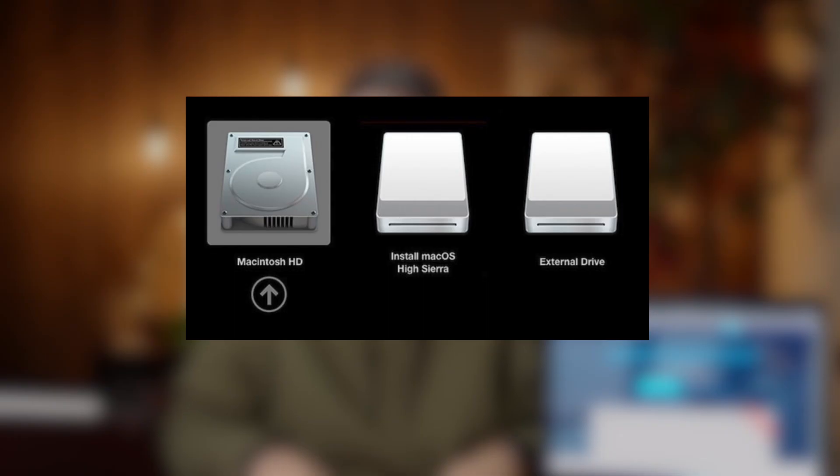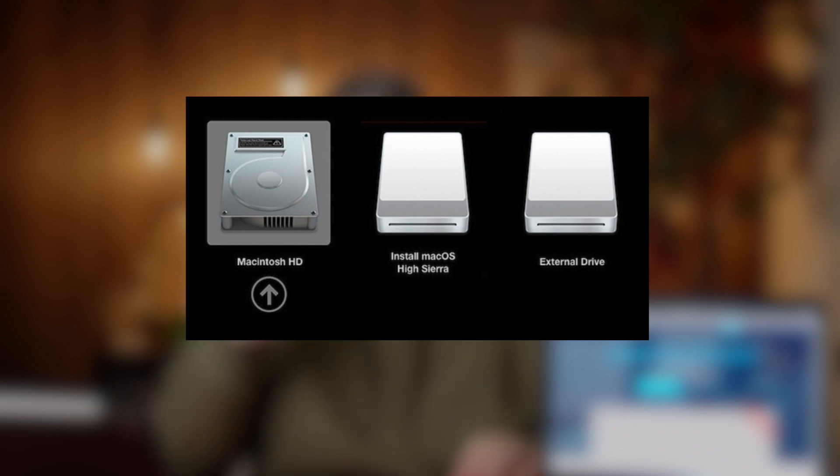Now you're ready to plug that drive into the machine you want to install it on. Start the Mac and hold down the Option key, then click next to Install. Your Mac will show the Startup Manager and you can select the external drive as your startup disk. Click Install macOS and click Continue — macOS will start installing on your Mac.